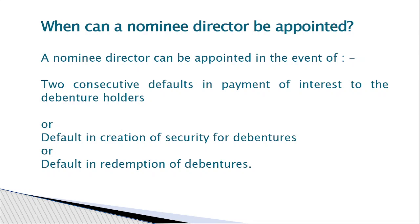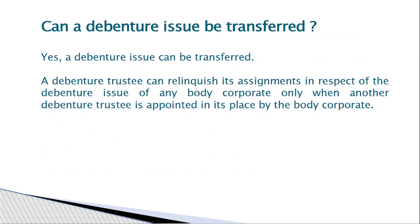Can the debenture trustee nominate a director into the company? Yes. For example, if the company issues a debenture promising 7.5 percent interest per annum and for the first six months no interest is paid, and the second term also no interest is paid, the debenture trustee can nominate one director into the company. Other conditions include default in creation of security for debentures, or default in repayment of the debenture on maturity — if the amount is not paid back to the investor, a nominee director will be appointed from the debenture trust to the company.